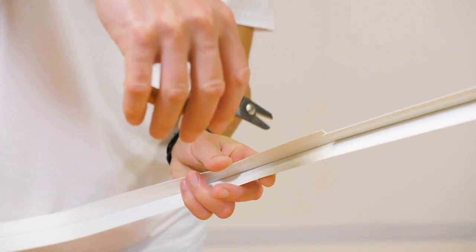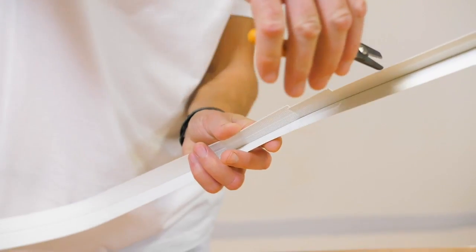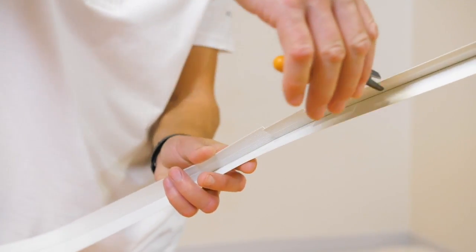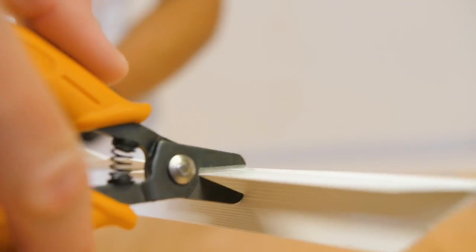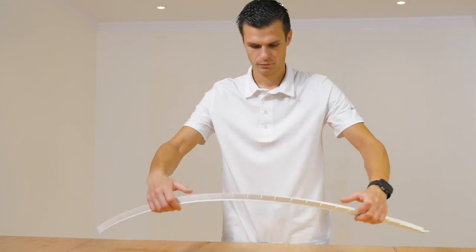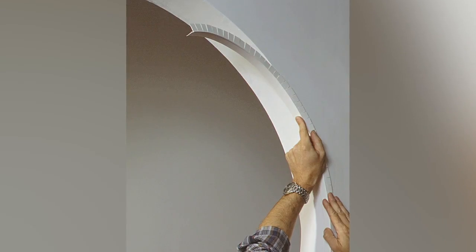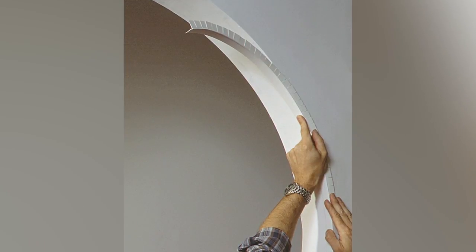Apply the same principle when arching, but just cut into the flaps every 2cm. This helps you to easily bend the profile guard and to perfectly finish off an arch.